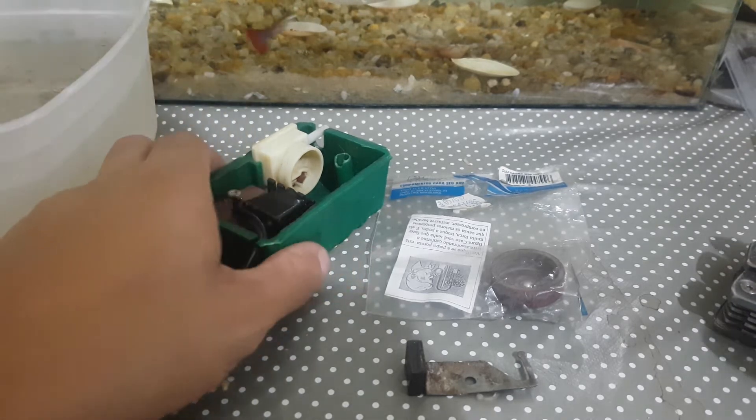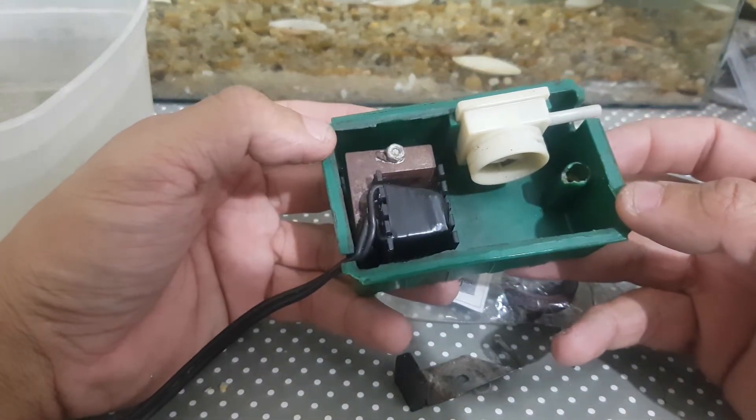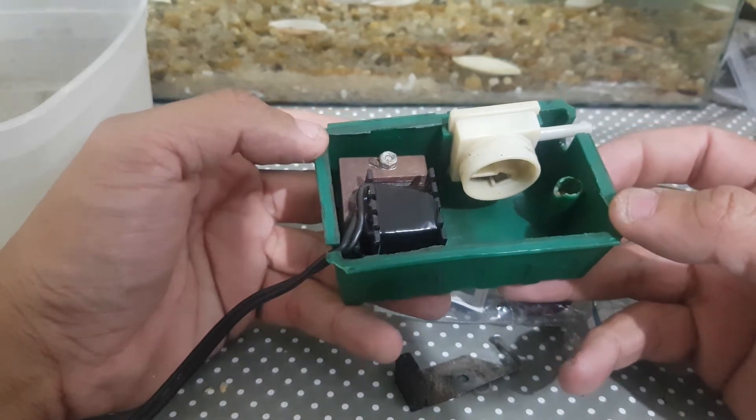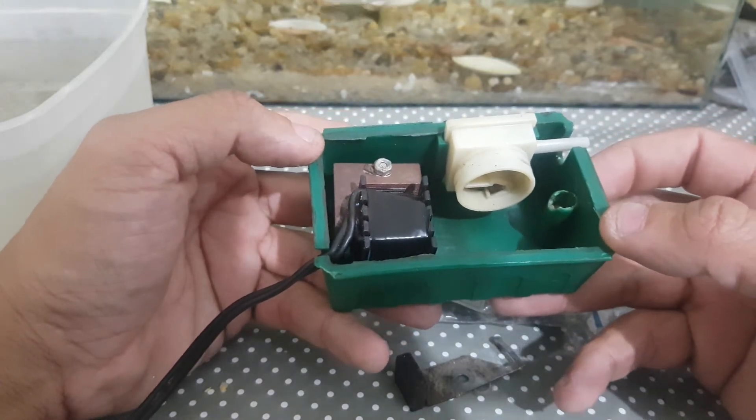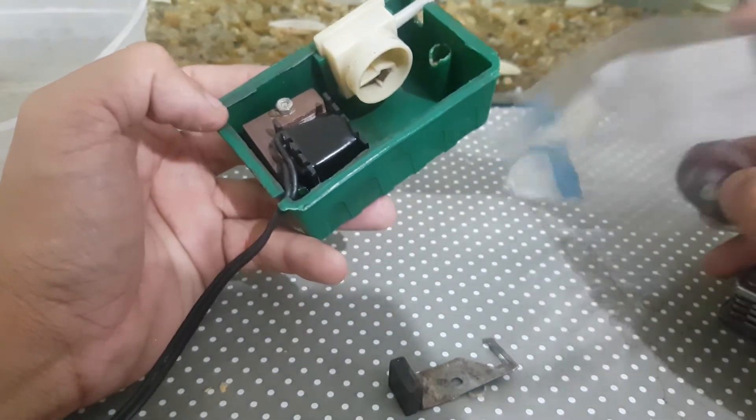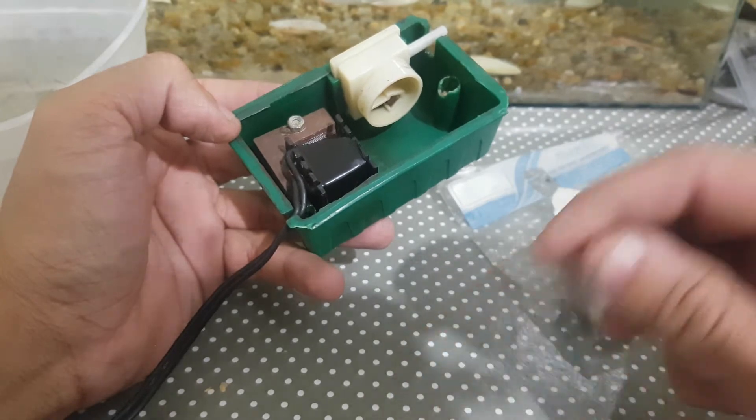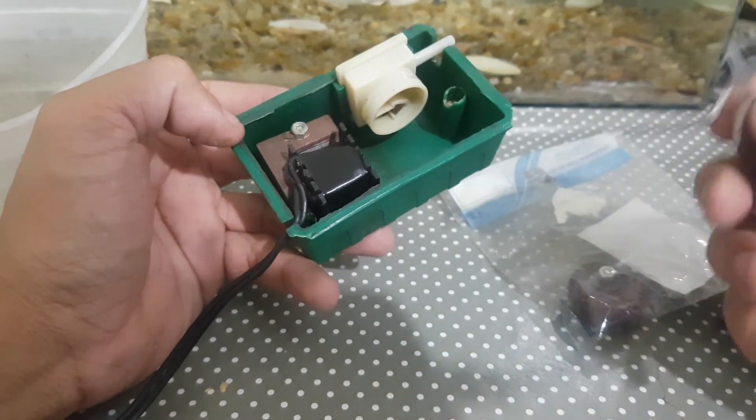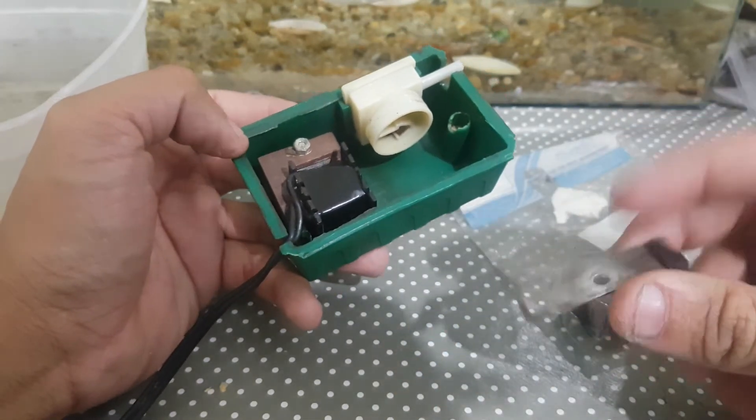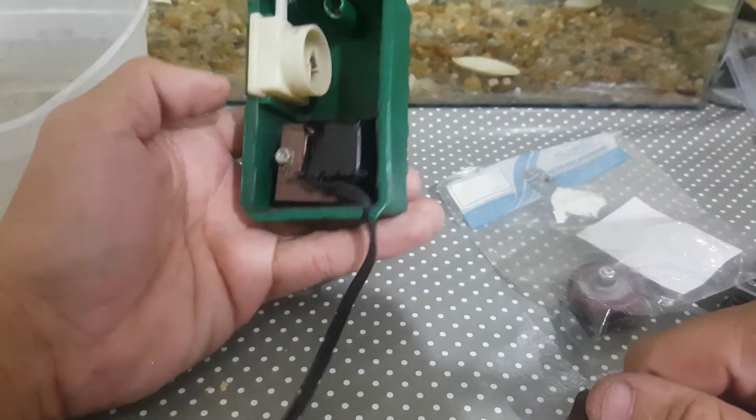Os nossos compressores que a gente faz uso para oxigenar a água dos nossos aquários, manter os nossos peixes lá sempre bem oxigenados, cheios de vida, saudáveis. Esses compressores, eles têm uma pecinha, que é o diafragma. Essa peça, com o tempo, ela resseca, ela perde a movimentação, ela rasga e a gente acaba perdendo a nossa bombinha.